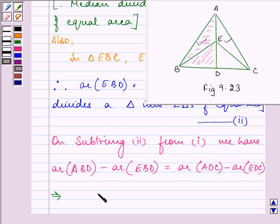That is, area of ABE. And on subtracting this area from this full triangle, we are left with this area, that is ACE. Therefore, area of ABE equals area of ACE.